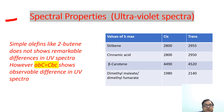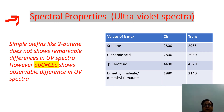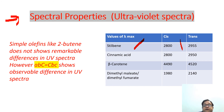Next, we will use spectral properties as a method for identifying geometrical isomers. Simple olefins like 2-butene do not show remarkable differences in UV spectra. However, cis and trans isomers of conjugated systems show observable differences. For stilbene, the cis isomer has λ_max of 2800 Å and the trans isomer has 2955 Å. Cinnamic acid has λ_max of 2800 Å for cis and 2950 Å for trans. Beta-carotene has values of 4490 Å versus 4520 Å. Dimethyl maleate and dimethyl fumarate differ with values of 1980 and 2140.